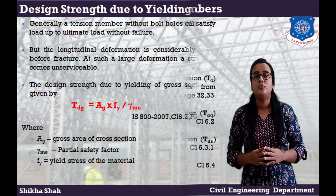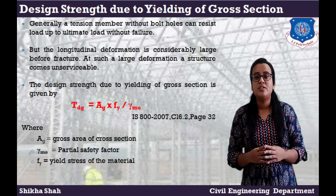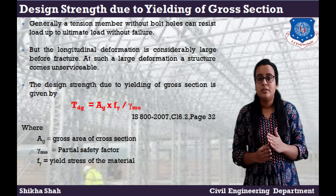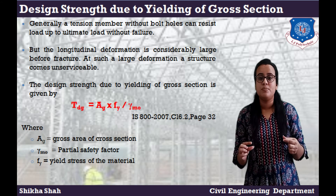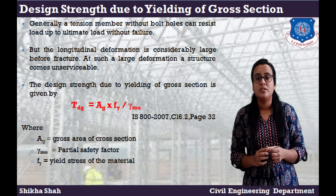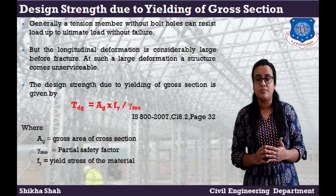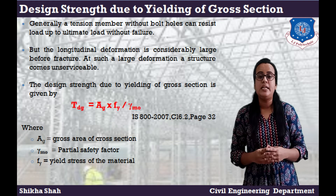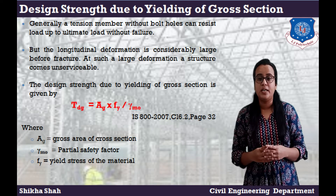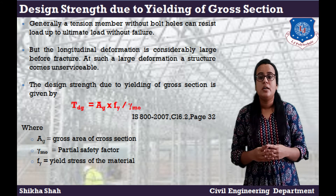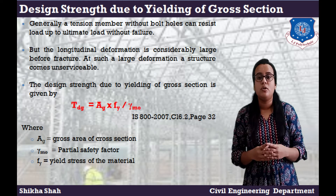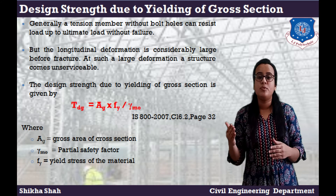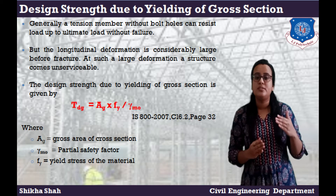Design strength due to yielding of cross section: generally a tension member without bolt holes can resist load up to the ultimate load without failure, but the longitudinal deformation is considerably large before fracture, and at such large deformation the structure becomes unserviceable. The design strength due to yielding is given by Tdg = AG × Fy / γm0, from Clause 6.2, page 32 of IS 800. Where AG is the gross area of the section, γm0 is the partial safety factor, and Fy is the yield stress of the material.